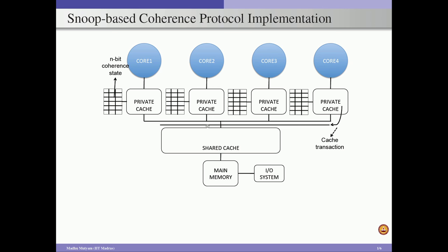As soon as a transaction is placed on the bus, all other cache controllers associated with our multi-core system will snoop on the bus. They take this transaction and, using the address specified in this transaction, they search in their private caches or the associated shared cache. If any cache finds a match for this request, that cache responds — either by supplying data, invalidating data, or updating data — depending on the type of protocol being designed.